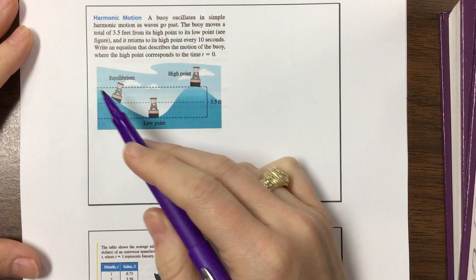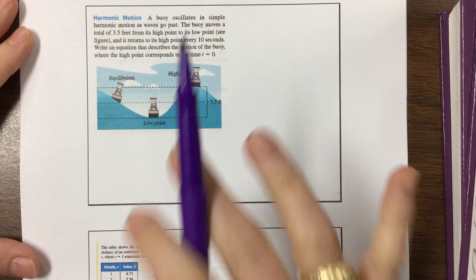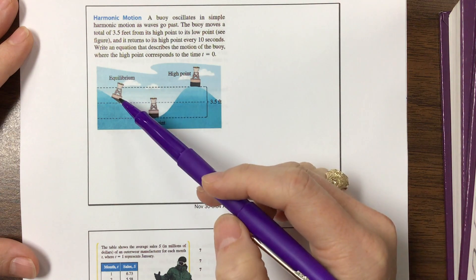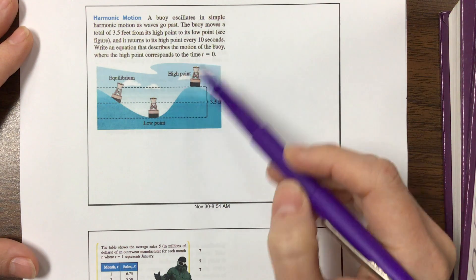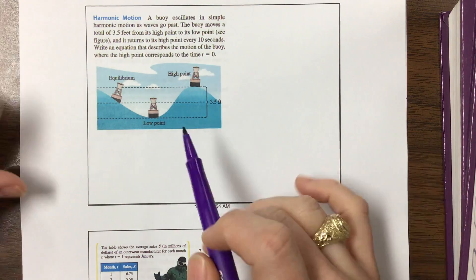We're looking at a buoy that's oscillating in the water. So as the waves come and go, the buoy goes up and down. Here it is at what they're calling equilibrium, then it goes down, and then it comes back, hits the equilibrium again, then it goes back up. It's just this buoy movement.